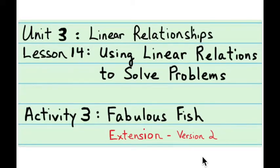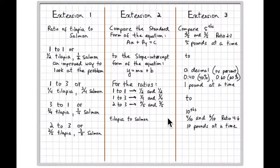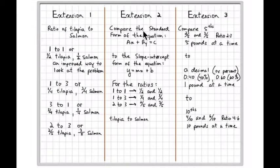This is an extension for Activity 3, Fabulous Fish, from Lesson 14: Using Linear Relations to Solve Problems. I became very interested in changing the ratio of each kind of fish while always spending $210 — what if I change the ratio from an equal number of pounds of each fish to one-quarter the weight for one fish and three-fourths for the other? I ended up putting together three extensions, and this is just the first of those three.